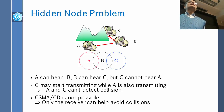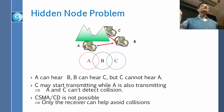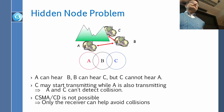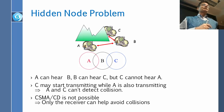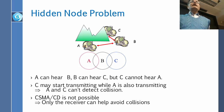In Ethernet, the sender detects the collision and stops. In Wi-Fi, we cannot do that. So the receiver has to tell the sender to stop. Therefore, this is called CSMA/CA — collision avoidance.